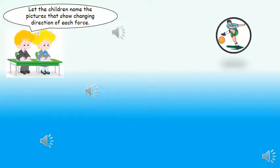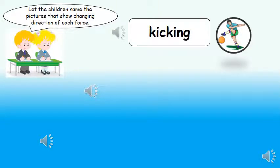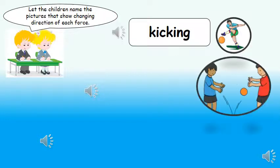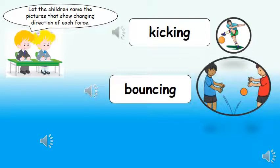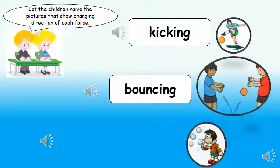Alright, so now children, what you're going to do is name the pictures that show changing direction of each object. What is this? Alright, so the boy is kicking the ball. So meaning, the ball will change its direction, right? Say kicking! Kicking. The second one, kicking.